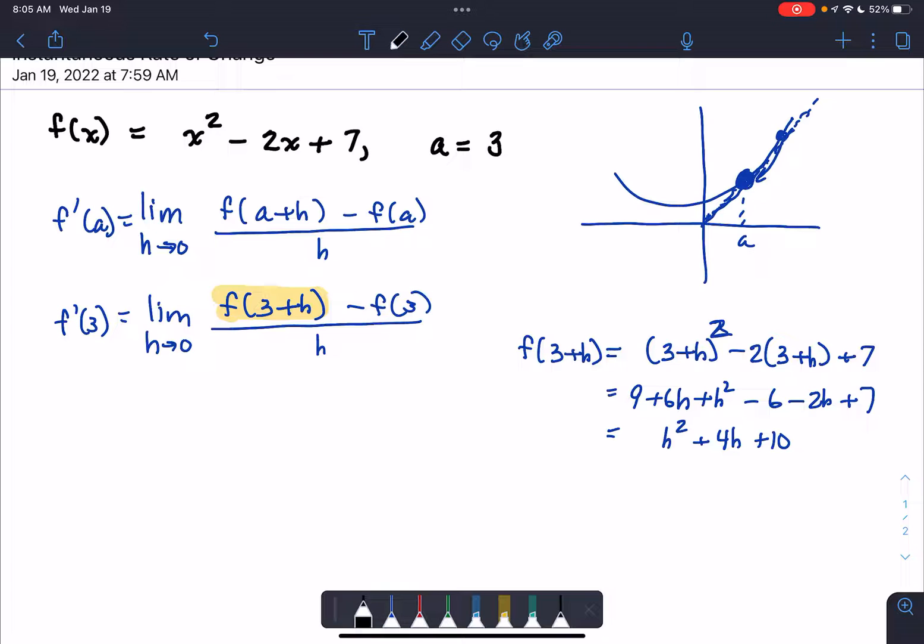So f of 3 plus h becomes h squared plus 4h plus 10.